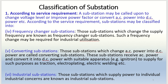Converting substations: those substations which change AC power into DC power are called converting substations. These substations receive AC power and convert it into DC power with suitable apparatus — for example, ignitrons — to supply for such purposes as traction, electroplating, and electric welding.